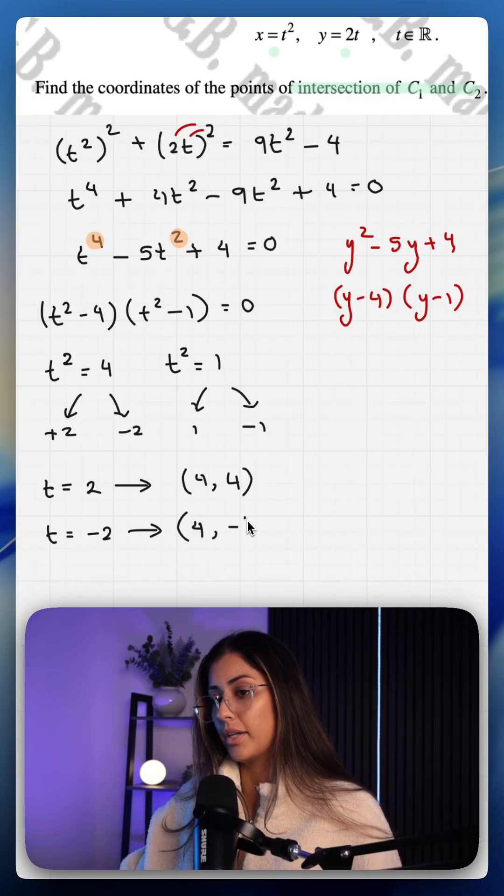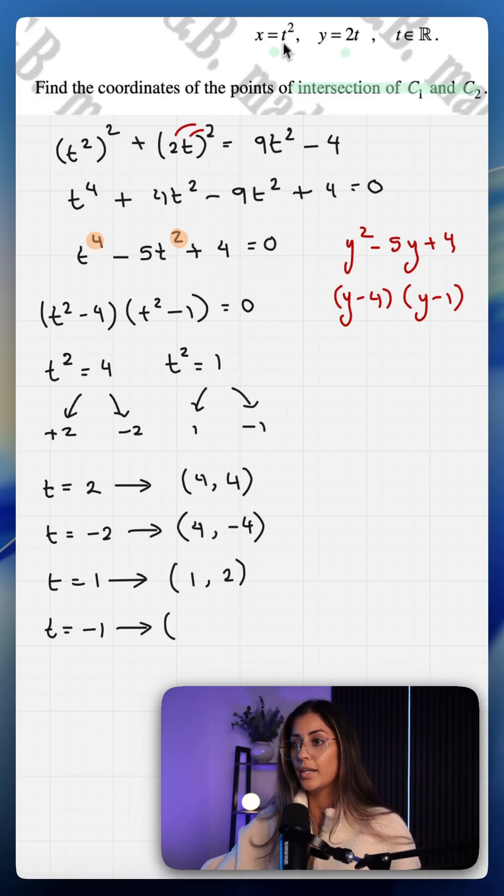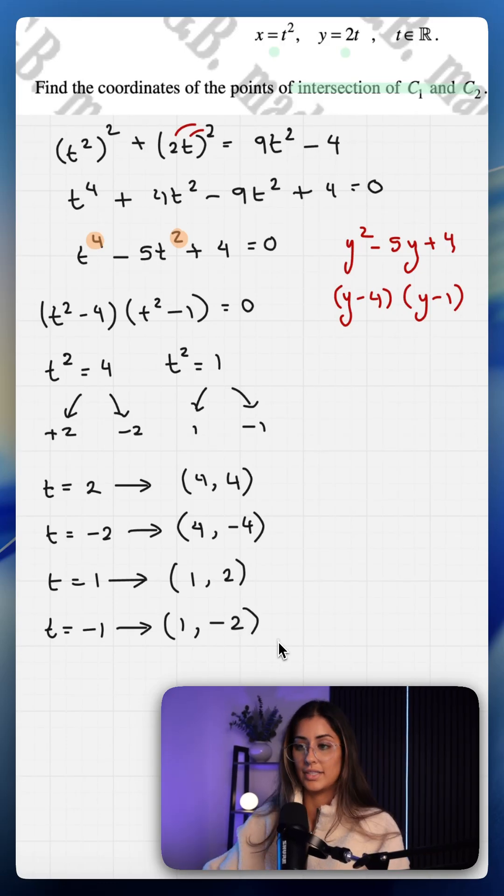So t equals 1, 1 squared is 1, 1 times 2 is 2 and minus 1 gives us minus 1 squared which is 1, minus 1 times 2 is minus 2. These are our four coordinates of intersection.